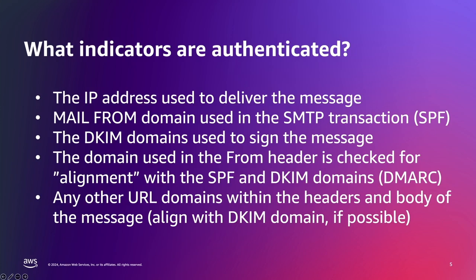These indicators include the IP address used to deliver the message; the mail from domain used in the SMTP transaction between SES and the mailbox provider, which is authenticated with SPF — SPF stands for Sender Policy Framework; the domain used to digitally sign the message with DKIM, which stands for DomainKeys Identified Mail; and any other URLs present in the message headers or body, and the domain used in the from header, which is checked for alignment with the SPF or DKIM domain. Alignment means it's matching or a subdomain. This alignment logic is called DMARC — DMARC stands for Domain-Based Message Authentication, Reporting, and Conformance. It is best practice to also align your URL domain to your DKIM domain if you can.